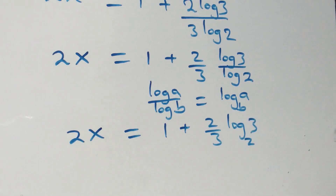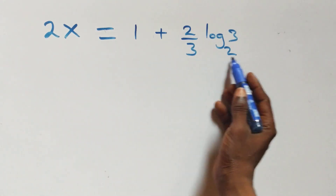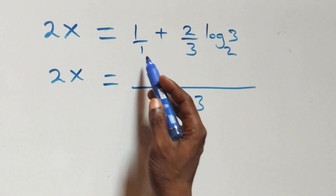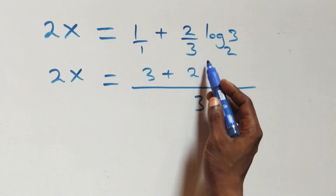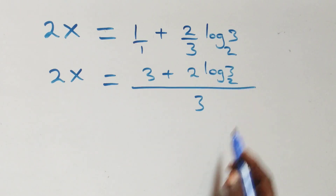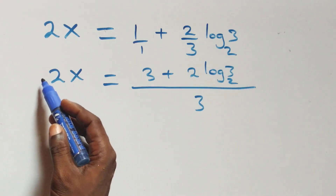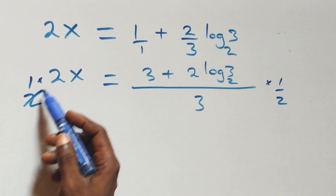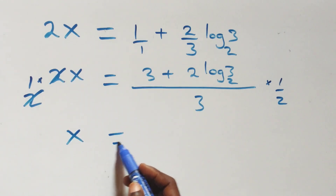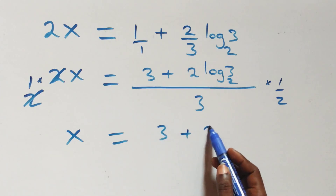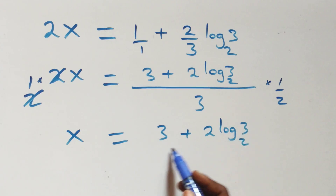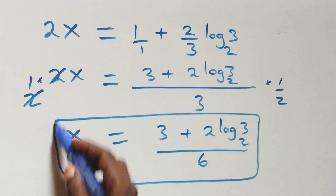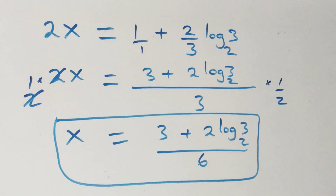From here we bring this together as one fraction. The 1 becomes 3 over 3, so 2x equals (3 plus 2 log base 2 of 3) over 3. We then multiply both sides by one half: the 2 cancels, leaving x equals (3 plus 2 log base 2 of 3) over 6. So the value of x in this problem is (3 plus 2 log base 2 of 3) all over 6.